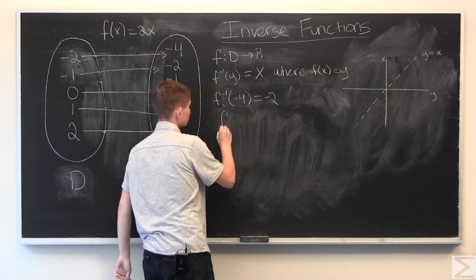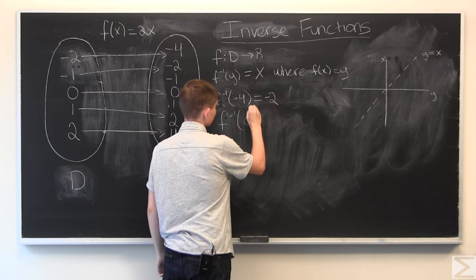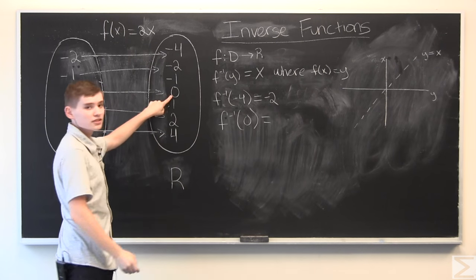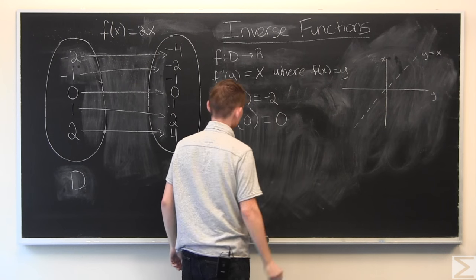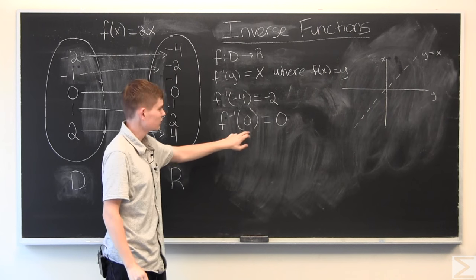And just to check, f of negative 2 is negative 4. So, f inverse of negative 4 is negative 2. And we could do this as many times as we want. f inverse of, say, 0, we find 0, we follow it back, and we get 0. So, f inverse of 0 is 0.